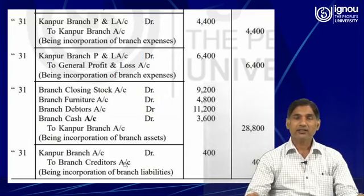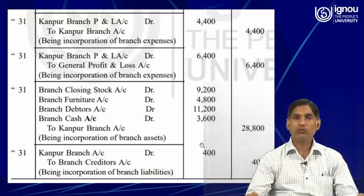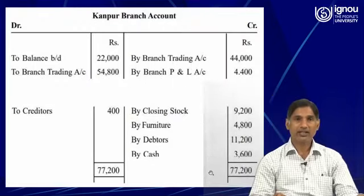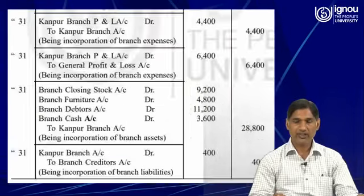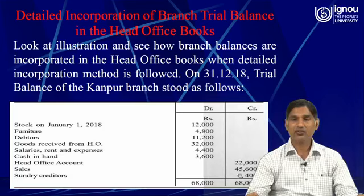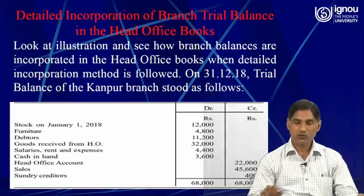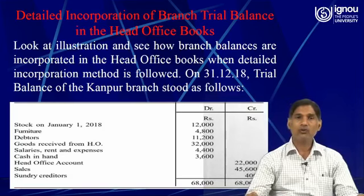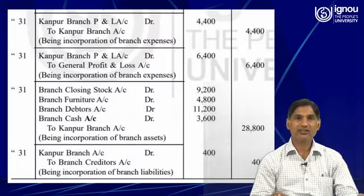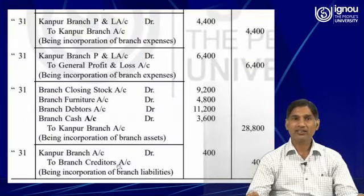Then the journal entries for the liabilities. The amount of 400 as creditors is also given in the trial balance on the credit side — we can check sundry creditors: yes, 400. For this amount of 400, the entry will be just the reverse: Kanpur branch account debit to branch creditors.